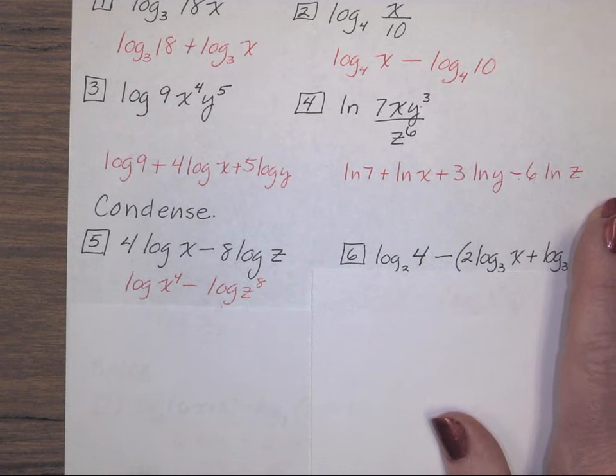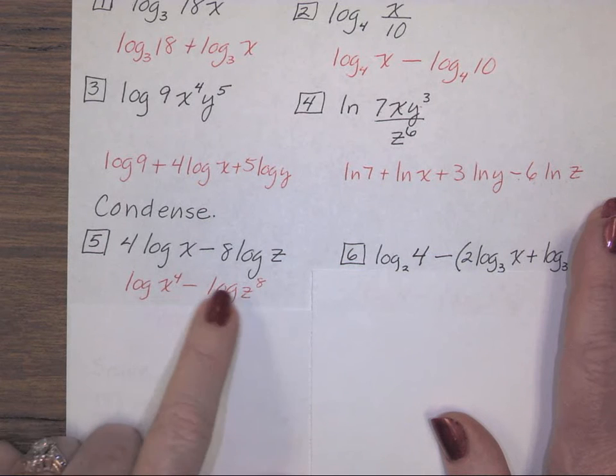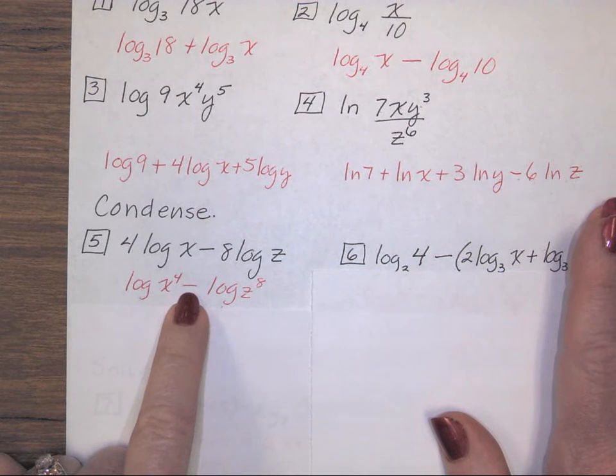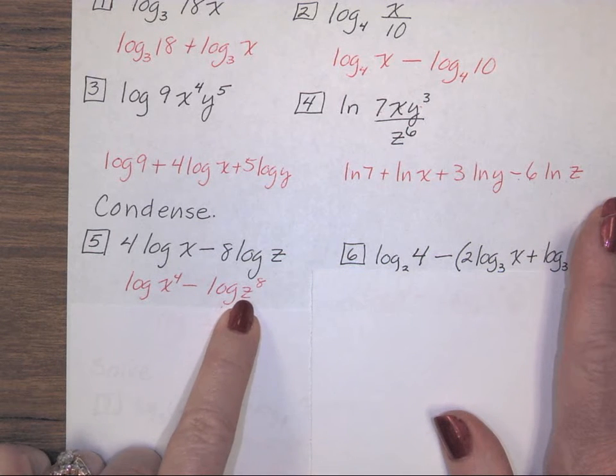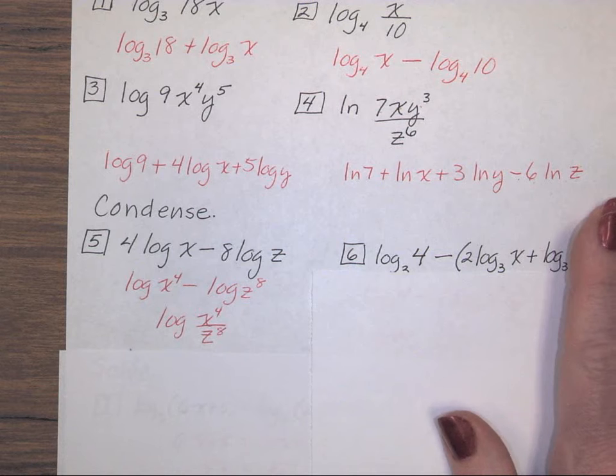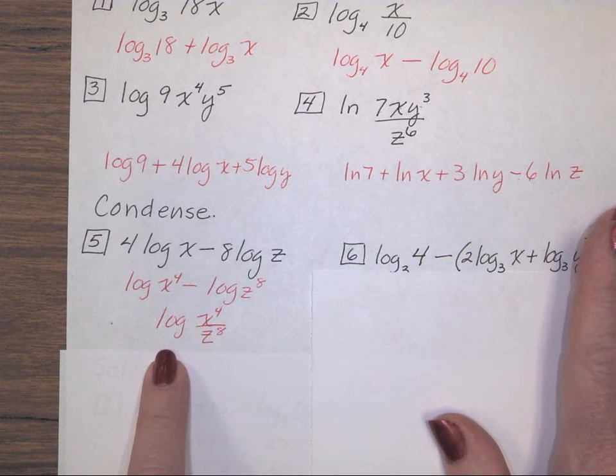On number 5, I started by moving coefficients back up as exponents first. And then when you're subtracting as a single log, you are dividing. z was the log that was being subtracted. It is the one that goes in the denominator. I have log base 10 of x to the 4th over z to the 8th.